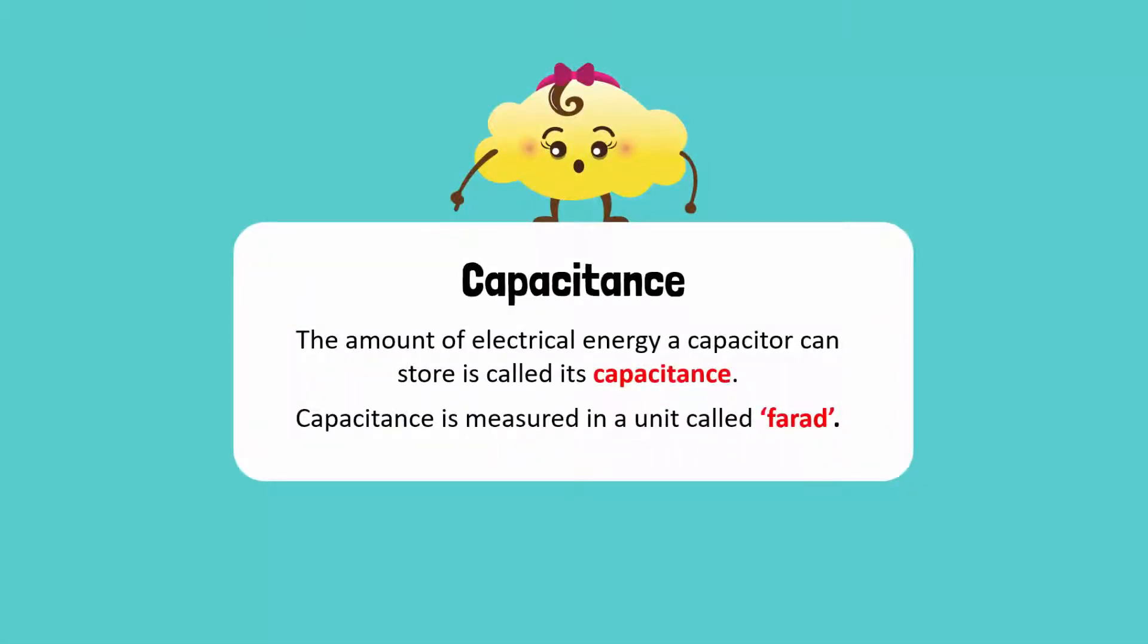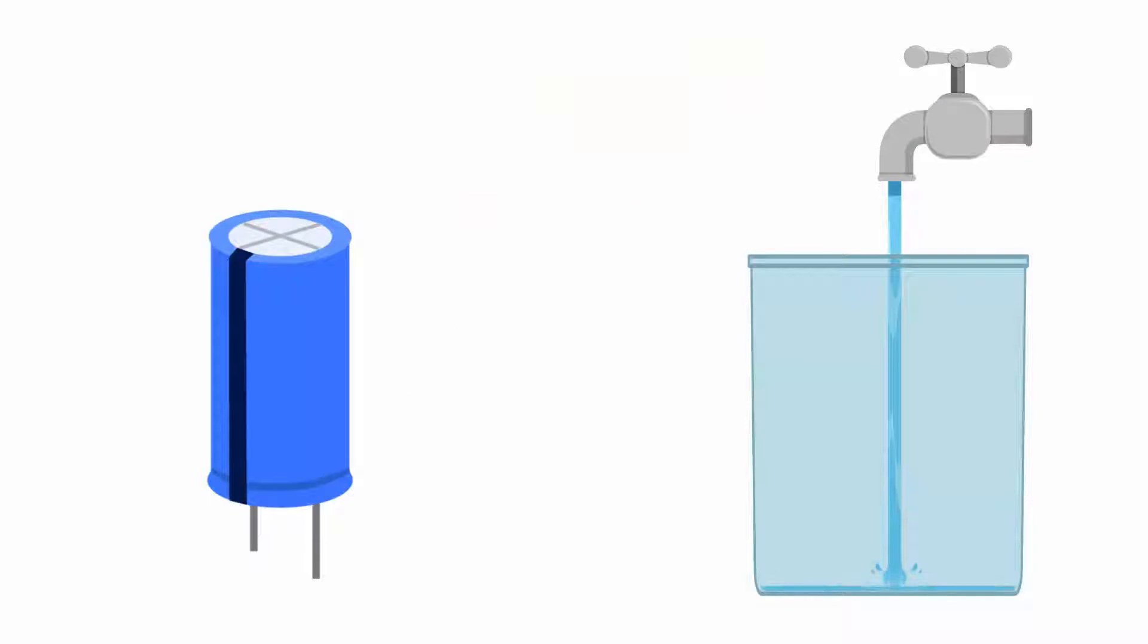The amount of electrical energy a capacitor can store is called its capacitance. Capacitance is measured in a unit called farad. The capacitance of a capacitor is a bit like the size of a bucket. The bigger the bucket, the more water it can store. The bigger the capacitance, the more electricity a capacitor can store.